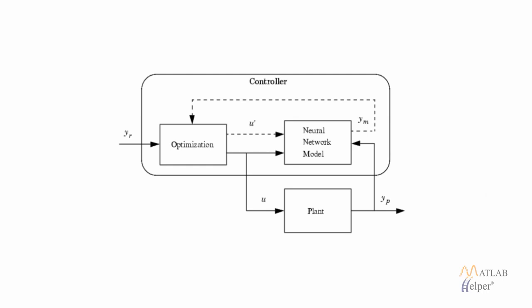The optimization block uses some optimization algorithm that optimizes the future plant performance, so our output from the plant will match nearly with the reference signal. Here U' is the tentative control signal and U is the control signal that is input to the plant. These two are basically the same — one is input to the neural network model and the second is input to the plant to predict YP.